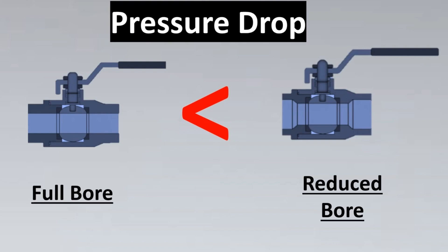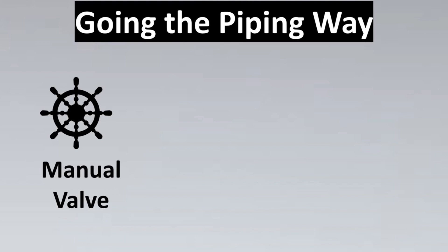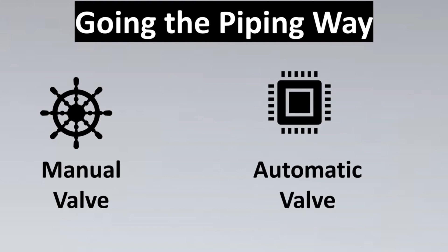How do we decide as instrumentation engineers which type of valve to select? A good thumb rule is to look at what the piping department is doing. In the same lines where instrumentation valves are used, manual valves procured by piping are also used. Since piping has a greater quantity of valves, they will have already done analysis to determine which type is suitable. So for our automatic valves, we can follow their piping specification as a thumb rule when selecting full bore or reduced bore valves.